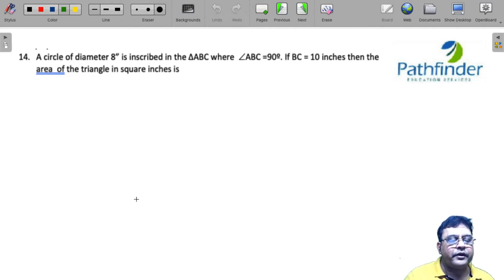CAT 2021, slot 1, question number 13. I think there is something wrong with this numbering. Anyways, so what do we have?